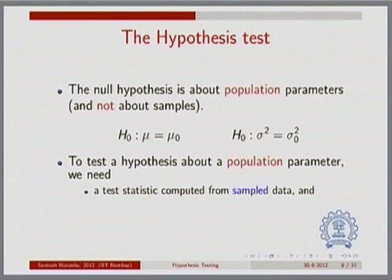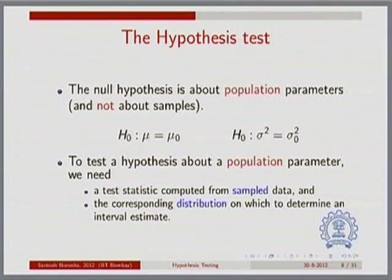To test a hypothesis about a population parameter there are two parts: first, compute a test statistic — anything computed from sample data is called a statistic. To make a comment about a hypothesis we need the population parameter and a statistic computed from sample data. We also need to know which distribution to sketch the statistic on — the shape of the distribution, where the goalposts are, and where our sample statistic ends up: inside or outside the interval.